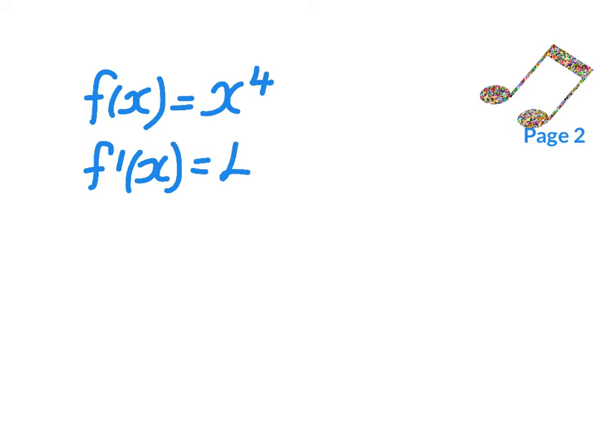And the first example, f of x is equal to x to the power of 4. So f dashed x is equal to 4x cubed.